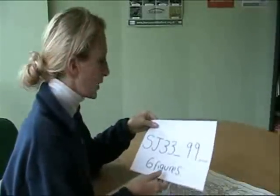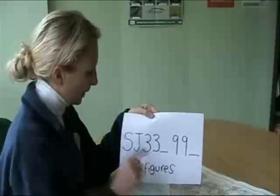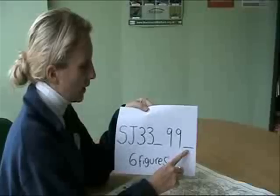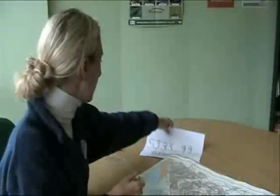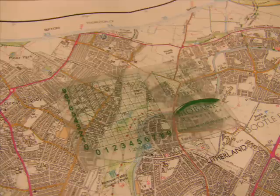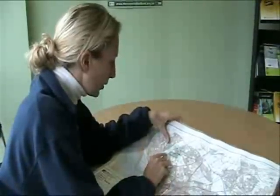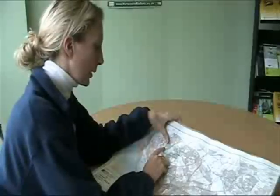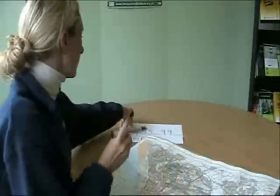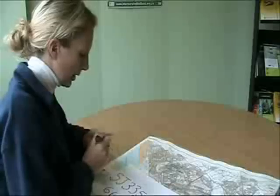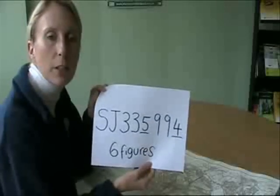If we want to make a six-figure grid reference, we've got our four figures — SJ 33 99 — but for six figures we need to fill in one extra digit for the eastings and one for the northings. To do that we can use one of these grid reference readers. If we overlay it onto our square that we've already identified, I can see that my footbridge is within number 5 along the bottom and number 4 going up the side. So I can put a 5 here and a 4 there, and we have a six-figure grid reference for our site.